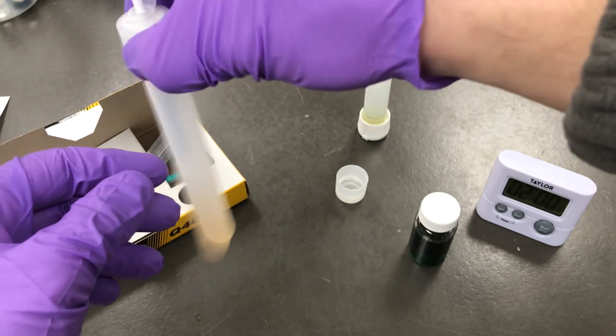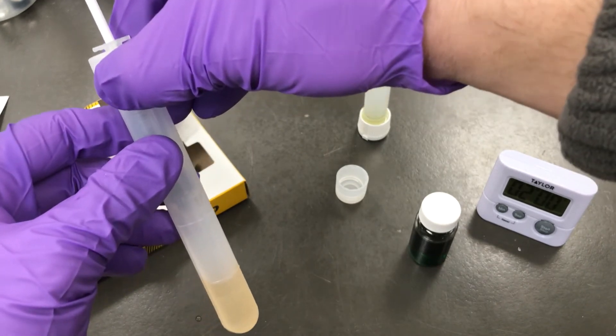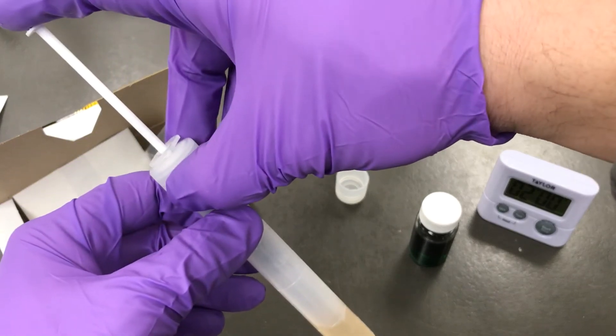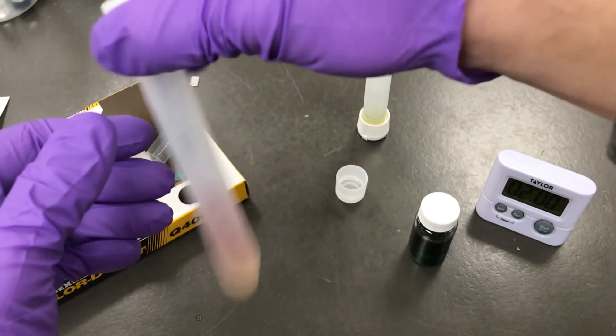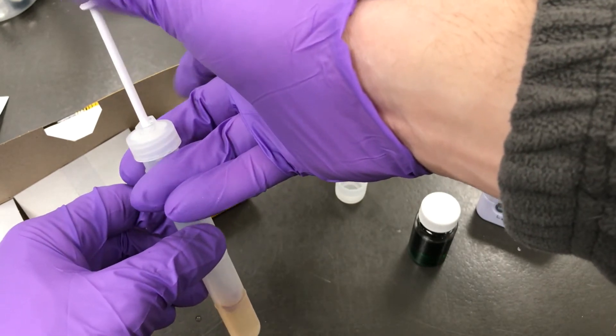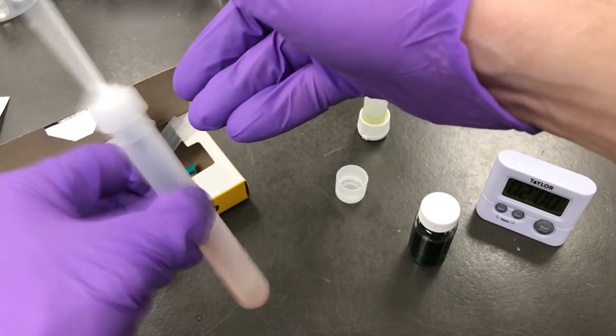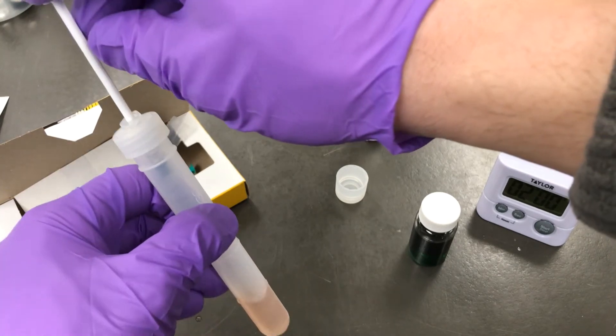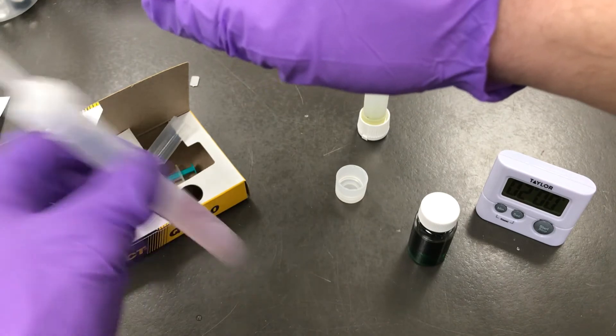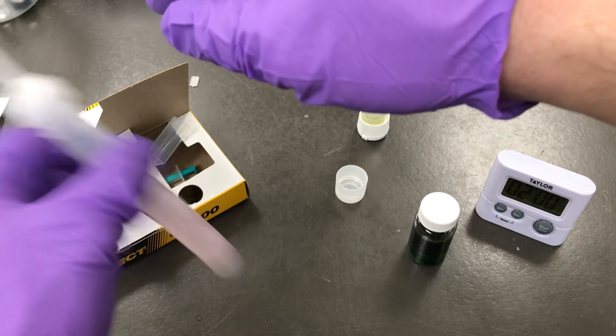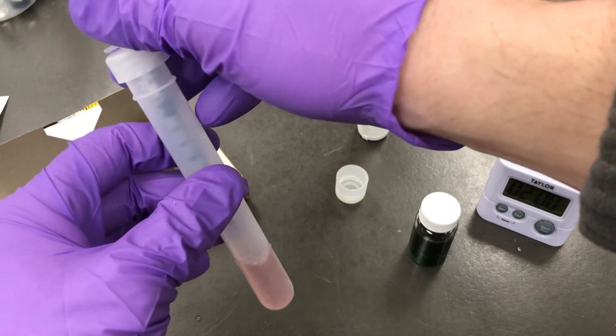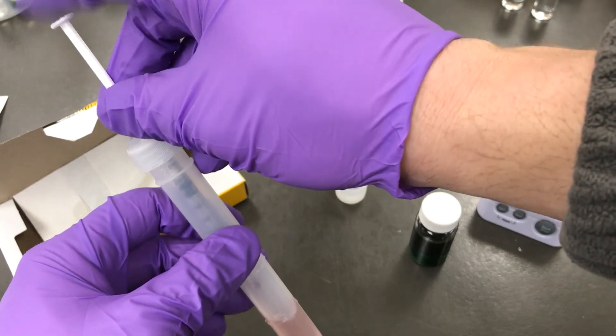Now, you'll want to start dispensing titrant dropwise and mixing between each drop. You'll notice that the color of the solution might change a little bit until you mix it and the color will fade away. You're looking for a color change from that yellow opaque color to purple, but you don't want to overshoot the endpoint. You might refer to the color chart in the instructions. You just want it to turn purple and stay purple after mixing.